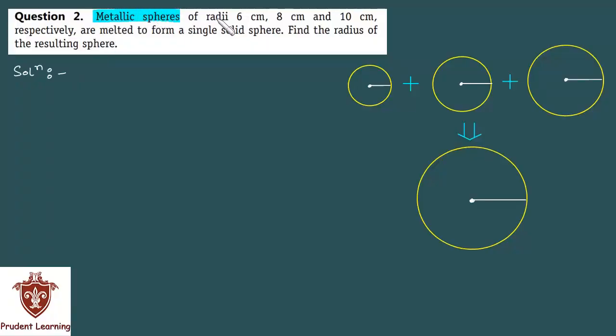Metallic spheres of radii 6 cm, 8 cm and 10 cm respectively are melted to form a single solid sphere. Find the radius of the resulting sphere.